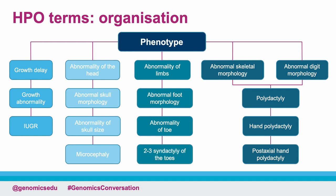A child term can have multiple parent terms. For example, post-axial hand polydactyly nestles under both abnormal skeletal morphology and abnormal digit morphology. This system provides flexibility that a simple hierarchical system would not allow. The example here is of a hierarchical system or tree structure of HPO terms for a patient with features suggestive of Smith-Lemli-Opitz syndrome.